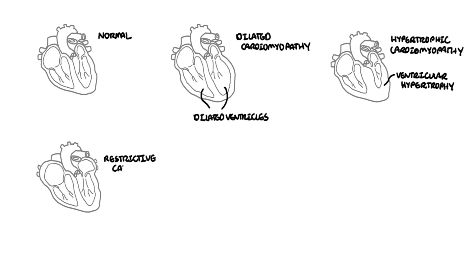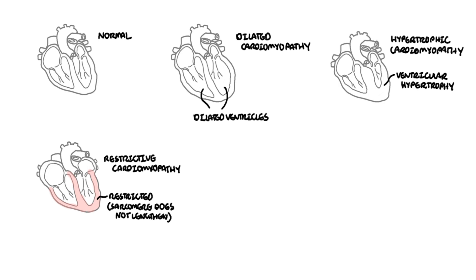Restrictive cardiomyopathy is where the heart muscles become stiff and not elastic. It is characterized by infiltrative, non-infiltrative, or storage diseases causing this restriction and stiffness. Restriction of the ventricle means the sarcomeres cannot lengthen effectively, leading to diastolic filling problems and reduced cardiac output. The ventricles build pressure in the atria, leading to dilated atria.